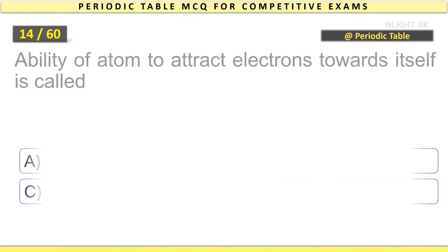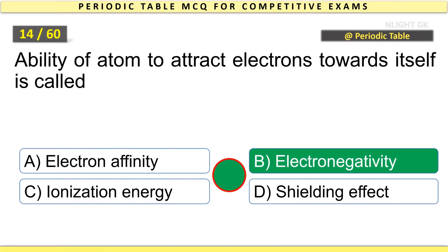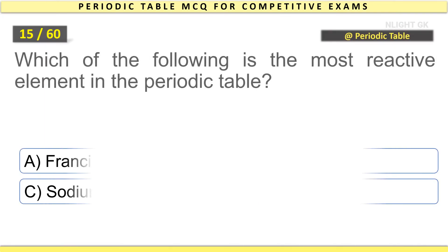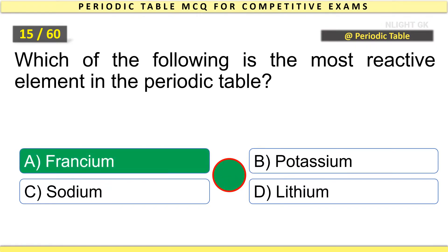Ability of atom to attract electrons towards itself is called electronegativity. Which of the following is the most reactive element in the Periodic Table? Francium.